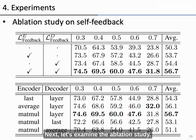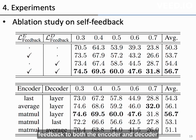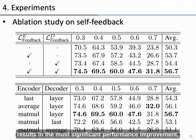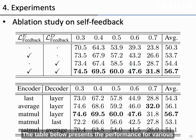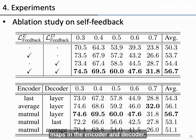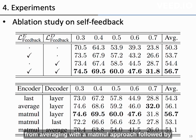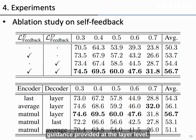Next, let's examine the ablation study. As shown in the table above, providing feedback to both the encoder and decoder results in the most significant performance improvement, compared to when no feedback is used. The table below presents the performance for various methods of providing guidance to the self-attention maps in the encoder and decoder. As indicated in the table, the encoder benefits from averaging with a min-max approach followed by guidance, while the decoder performs best when guidance is provided at the layer level.